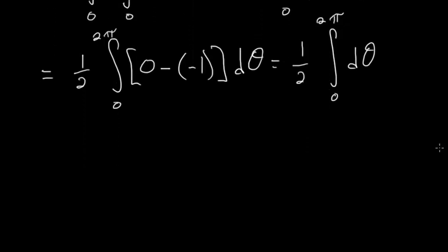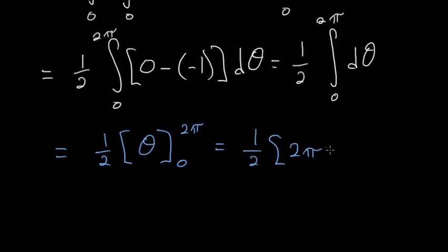And this integral now evaluates to 1 half times theta with the bounds of 0 and 2 pi. So 0 makes this 0. So we really only have to worry about the 2 pi. So we have 1 half times 2 pi, which is just equal to pi.